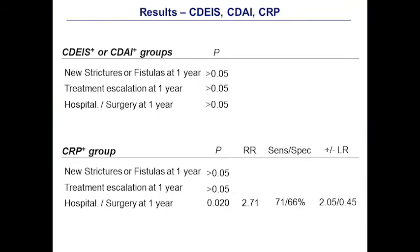It is important to underline that at one year of follow-up, no clinical outcome was associated to baseline endoscopic index or clinical index, while only patients with elevated CRP values at baseline showed an increased risk of hospitalization or surgery at one year of follow-up. In conclusion, our results confirmed that endomicroscopy can assess microscopic inflammatory changes conventionally used by standard histopathology to assess diagnosis and disease activity in Crohn's disease.